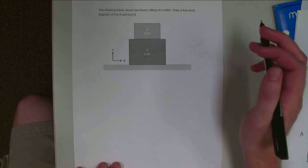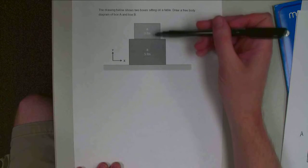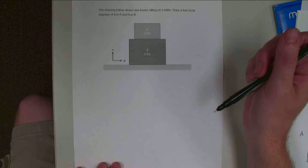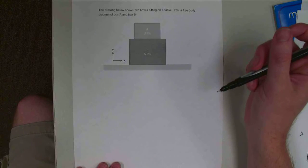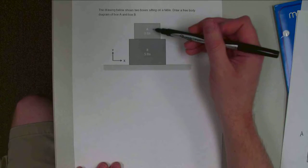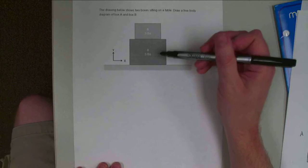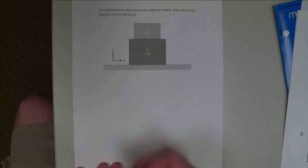Hello. For this video, we've got two boxes, box A and box B, sitting on a table here. We're asked to draw a free body diagram of box A and a free body diagram of box B. So these are going to be two separate free body diagrams.